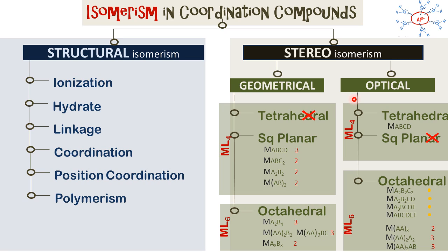When we are looking at stereoisomerism, we look at some special cases like the tetrahedral and square planar, which are represented as ML4 where M is the central metal ion surrounded by four ligands. We also look at octahedral arrangements, which are central metal ions surrounded by six ligands.